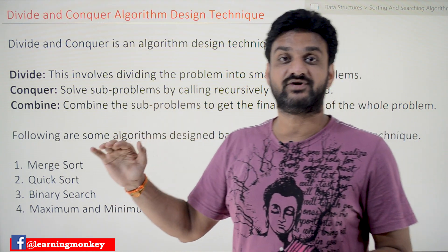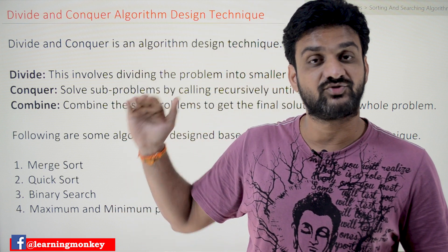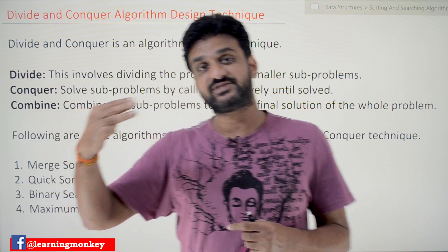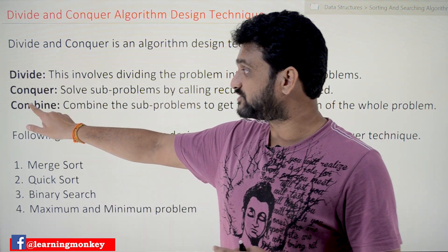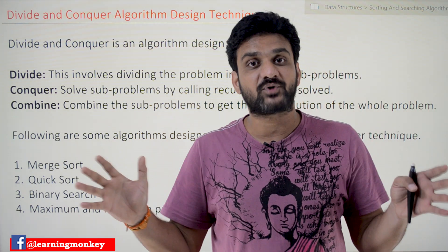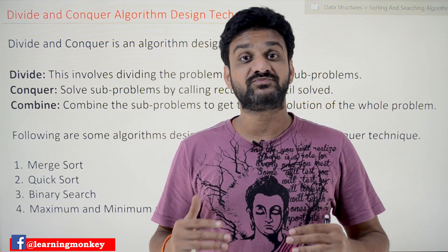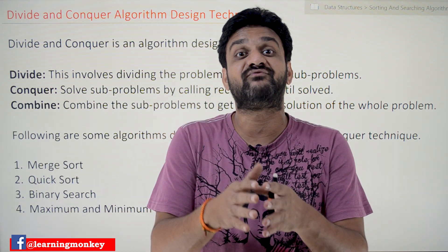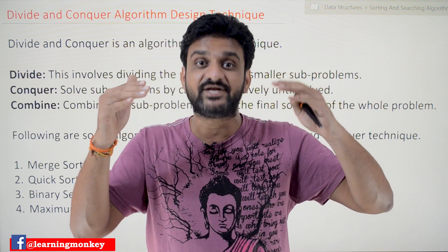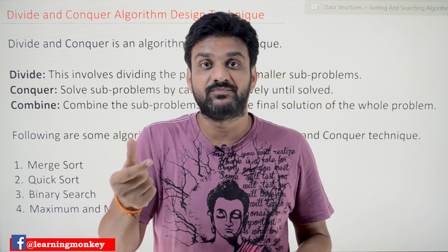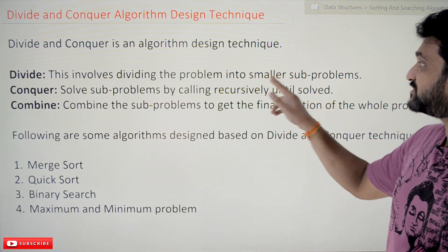What is this technique and how does it solve problems? For example, if you have a problem, there are some problems which can be solved using divide and conquer. There are three steps followed by this algorithm design technique: divide, conquer, and combine. The first step, divide, means that a problem will be divided into sub-problems — broken down into smaller and smaller pieces until it cannot be further divided.